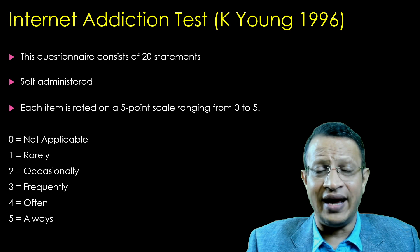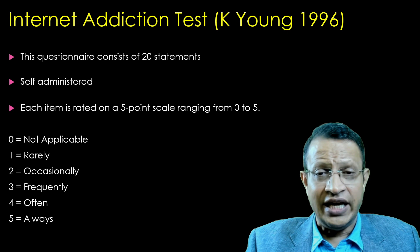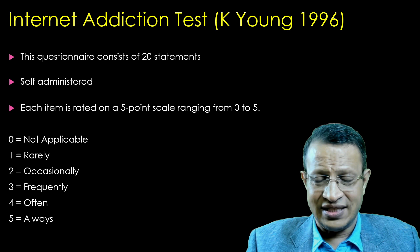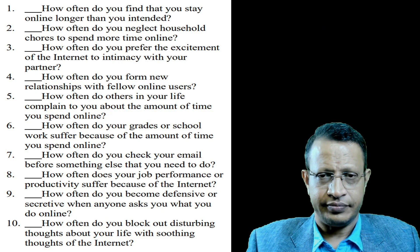The Internet Addiction Test has 20 items or statements and is self-administered. Any person who can read and write English can administer it themselves. Each item has a 5-point scale from 0 to 5, where 0 is 'not applicable' and 5 is 'always.' The higher the score, the more severe the illness.